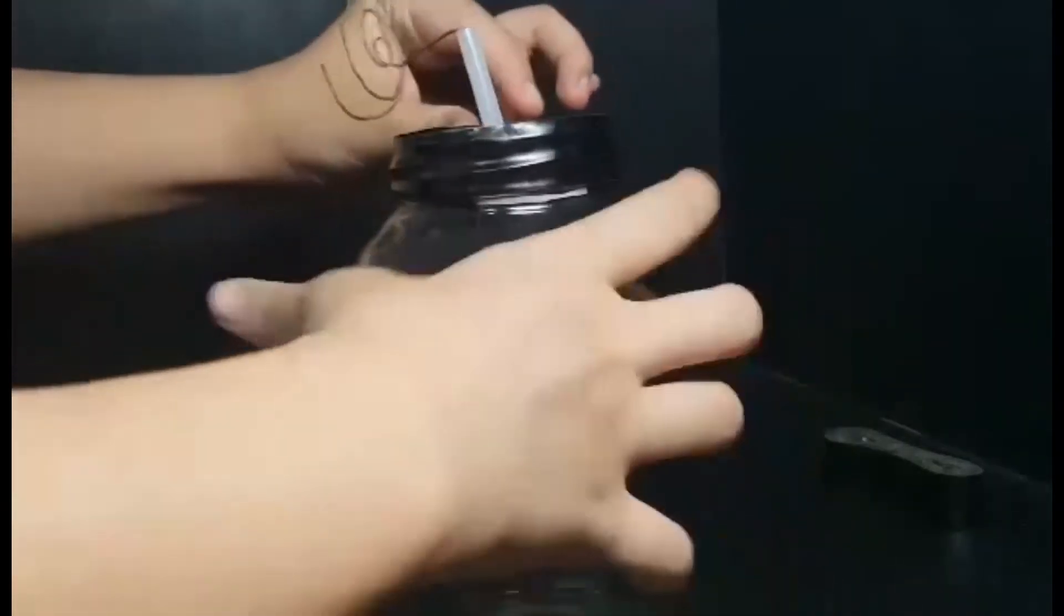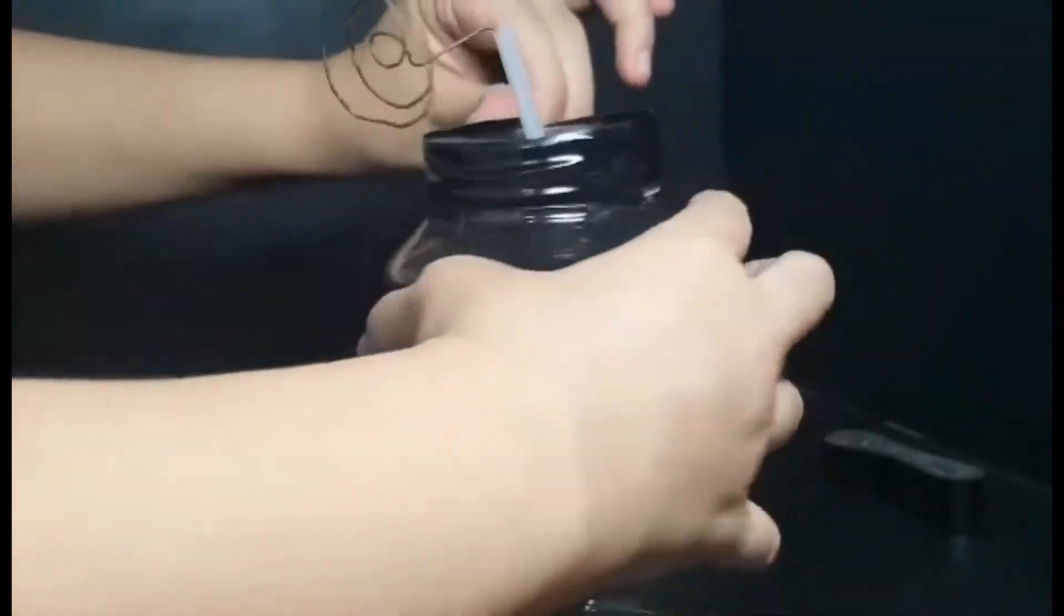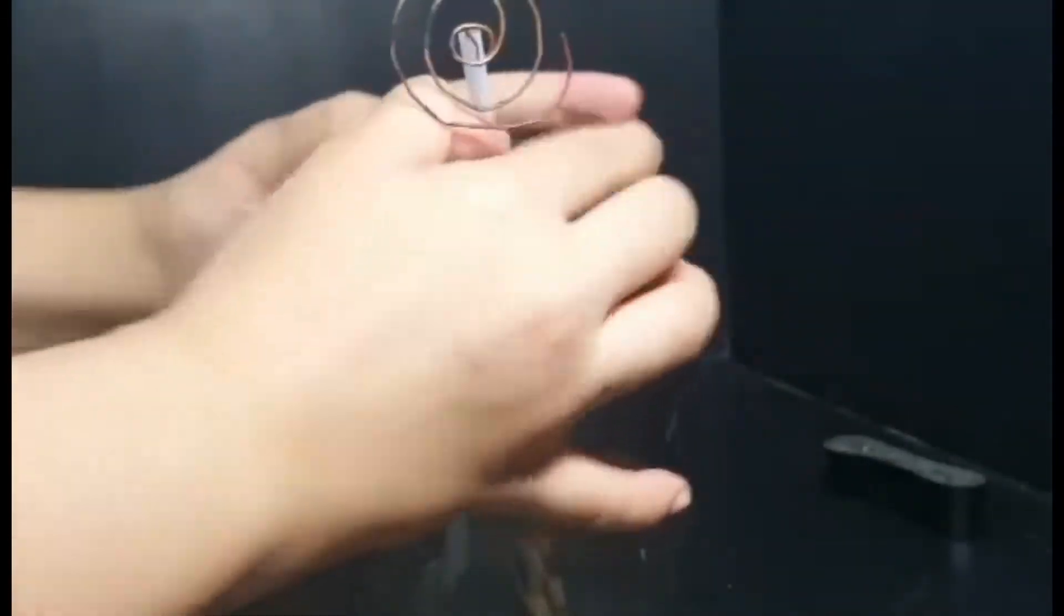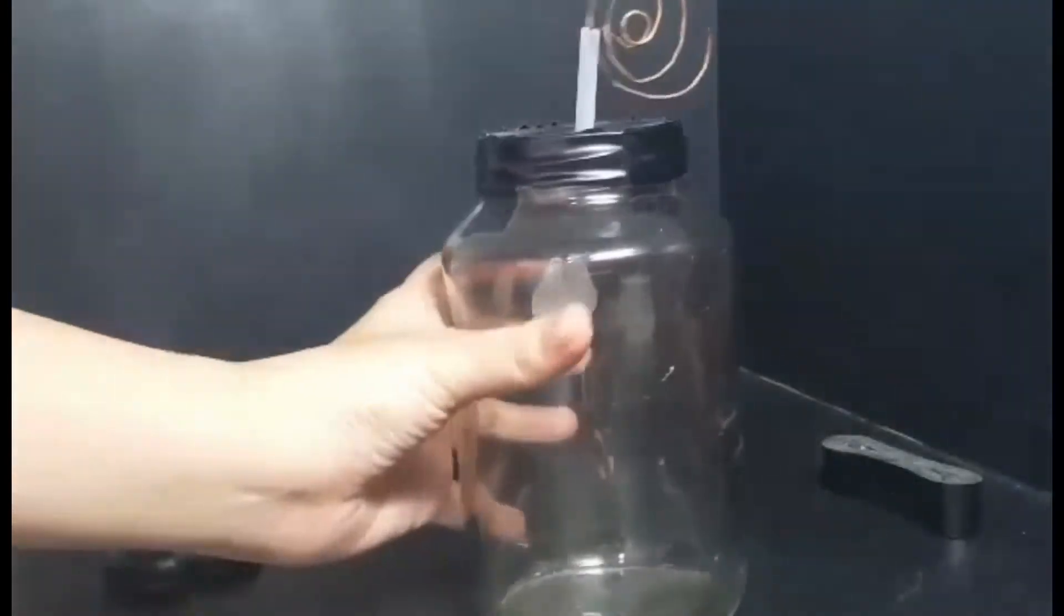Place the hook and the metal into the jar and twist on or tape the lid to the wire.